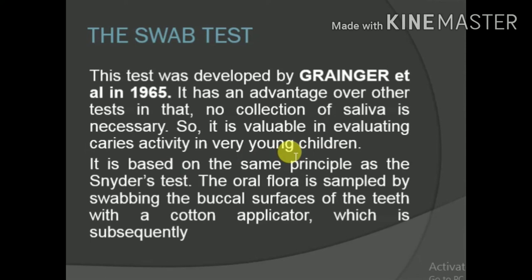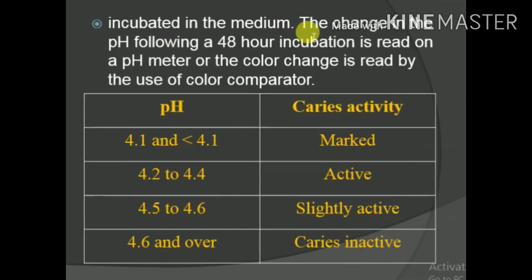The swab test is based on the same principle as the Snyder's test. The oral flora is sampled by swabbing the buccal surfaces of the teeth with a cotton applicator, which is subsequently incubated in the medium. The change in pH following 48-hour incubation is read on a pH meter or by use of a color comparator.